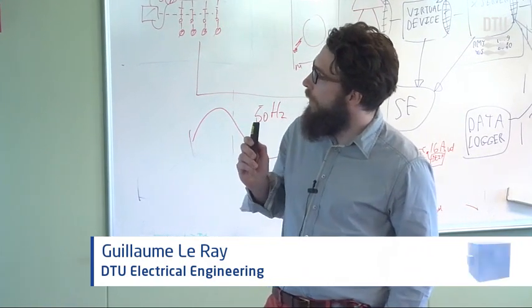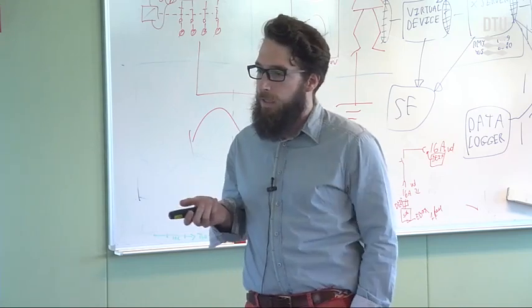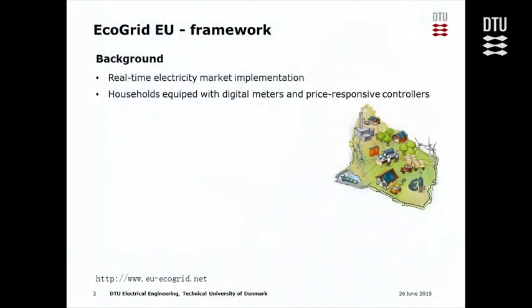EcoGrid is a project developed on Bornholm where we have a real time electricity market implemented where households are equipped with digital methods collecting information about their consumption and price responsive controllers responding to the variation of the price.